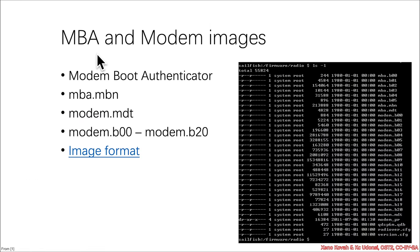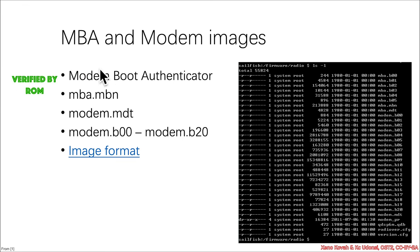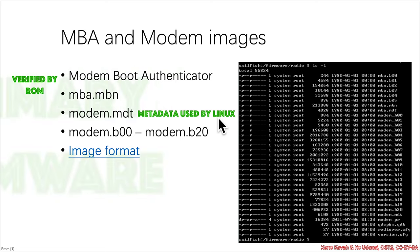The particular vulnerability has to do with the loading of the modem or cellular baseband firmware. There's a component called MBA — modem boot authenticator. Looking at the firmware files, you have MBA files, modem files, and some miscellaneous others. The MBA.mbn files are verified by the ROM on the peripheral processor. Then there's modem.mbt, which is just metadata used by Linux. The primary firmware files are named like modem.b00, etc.